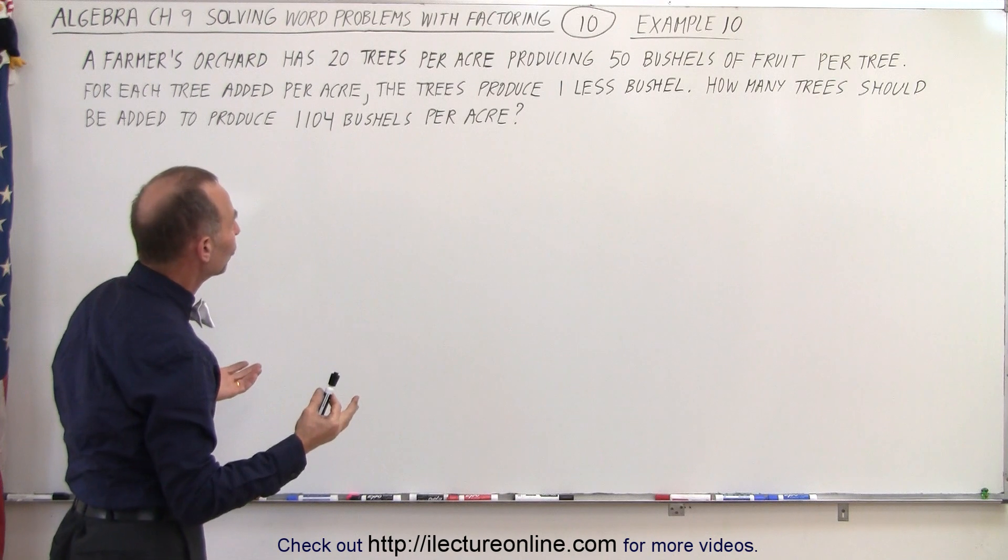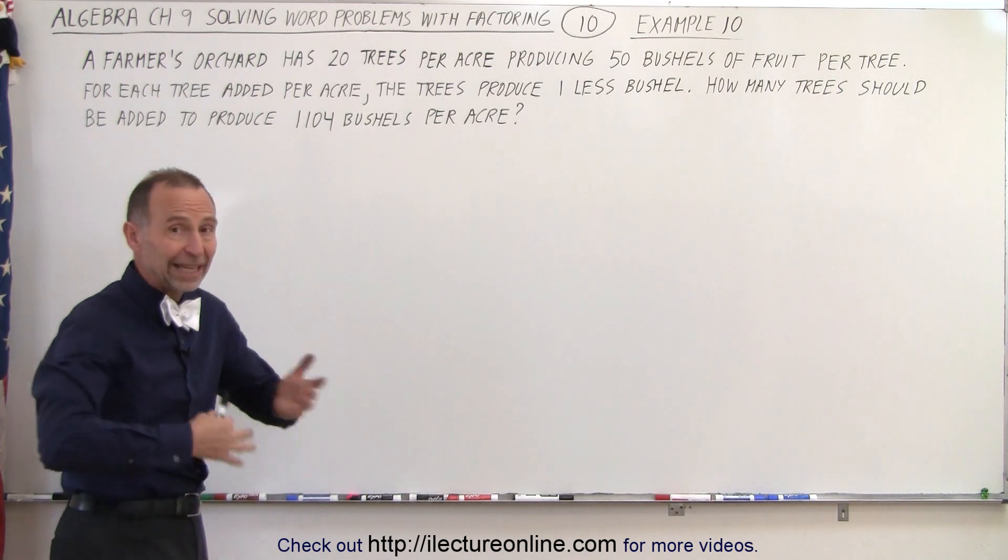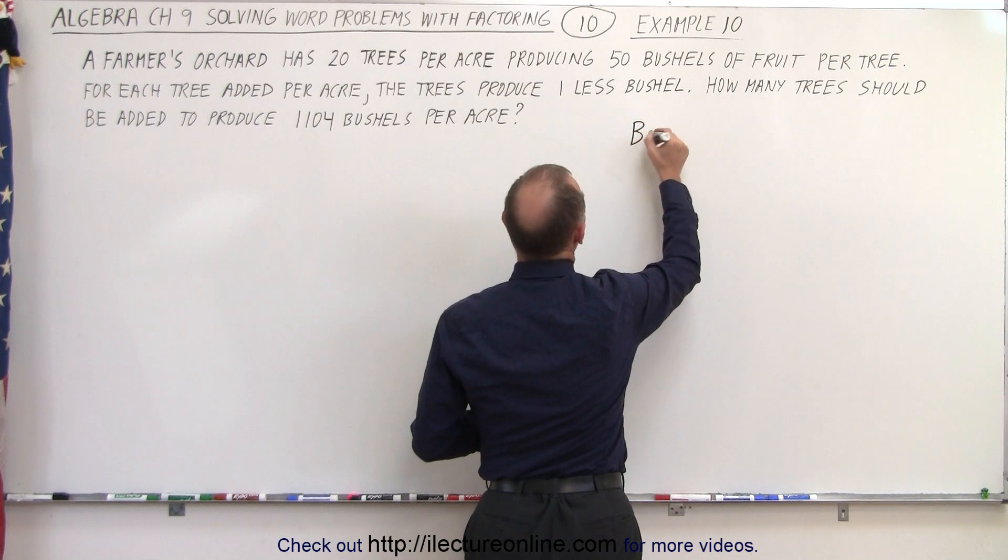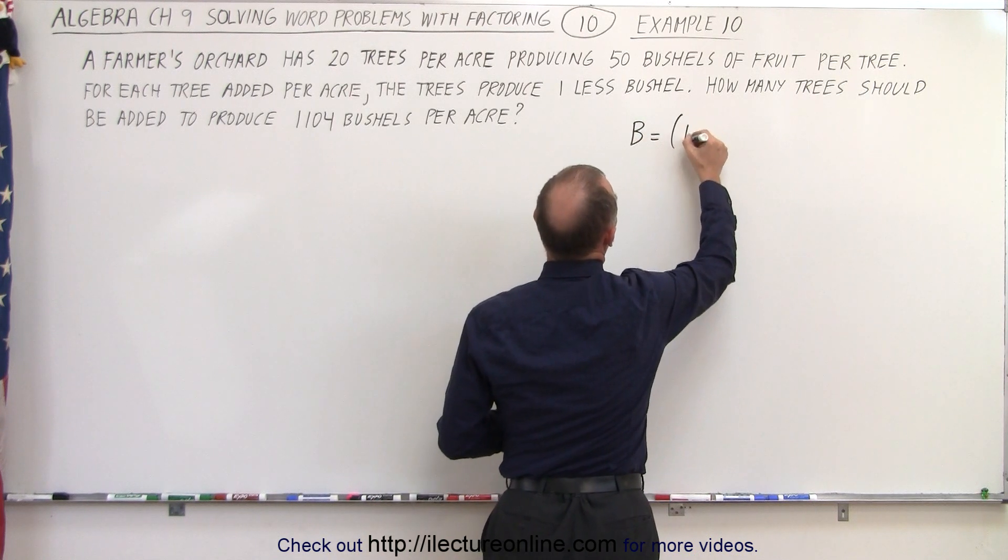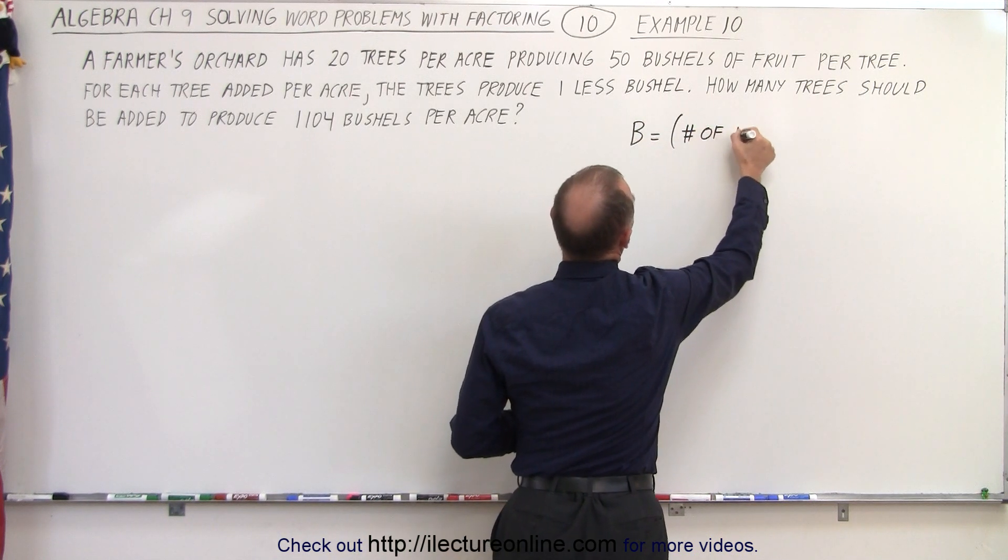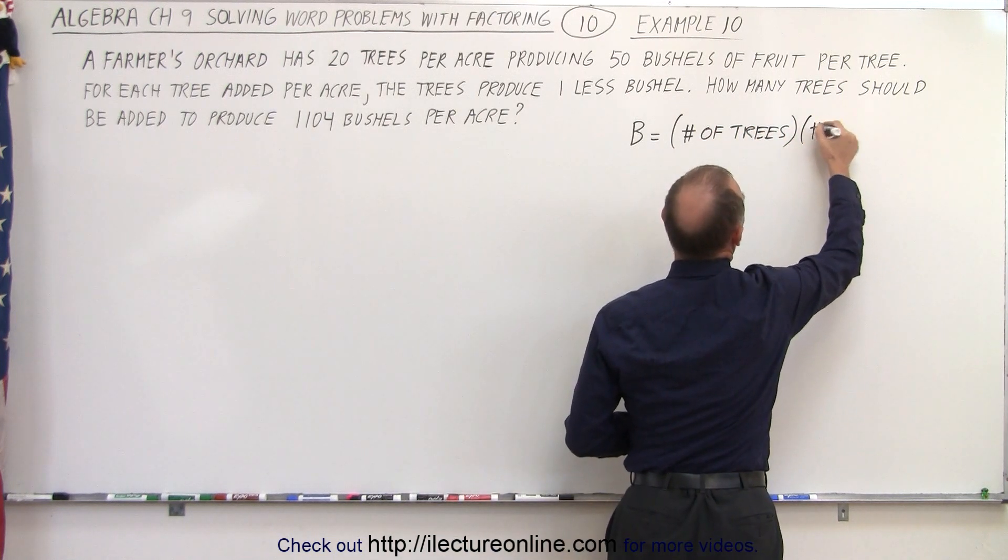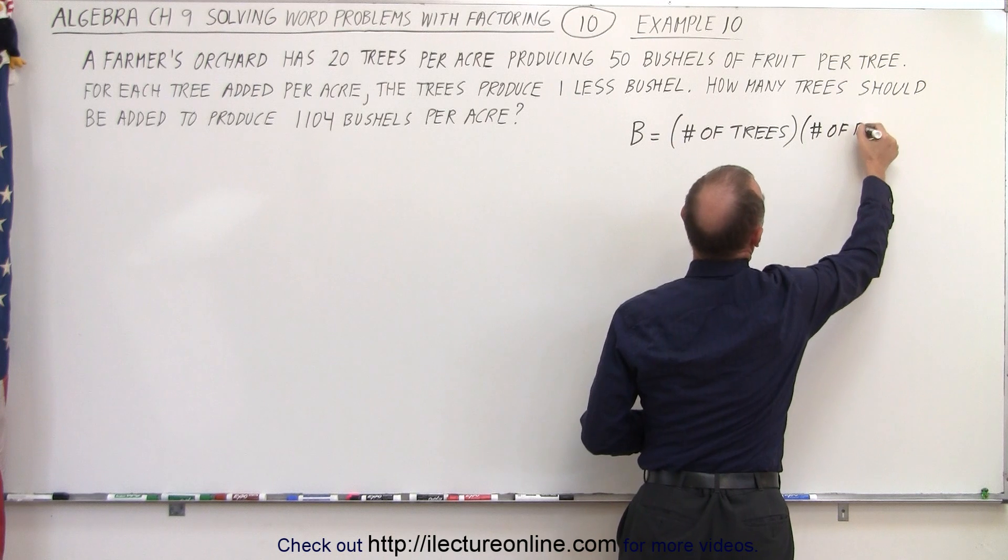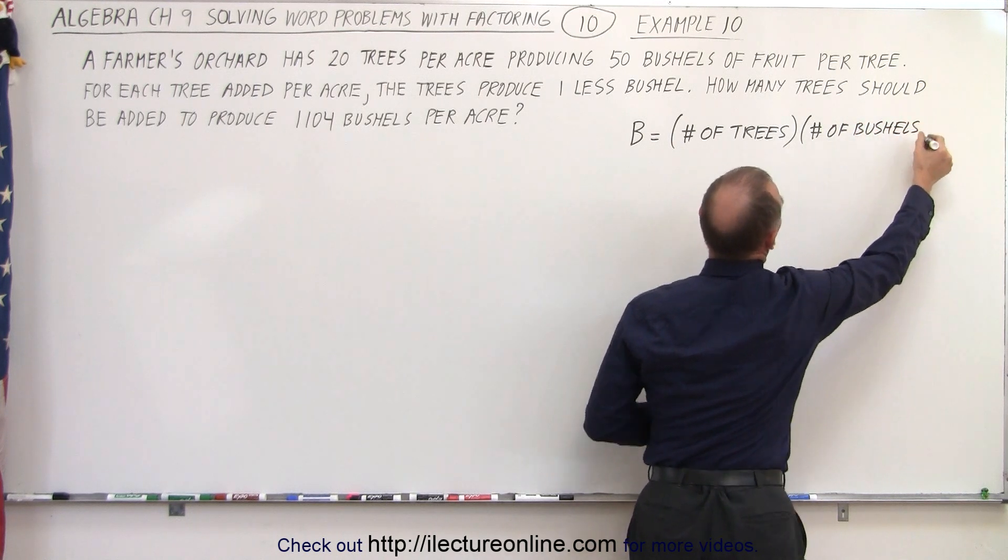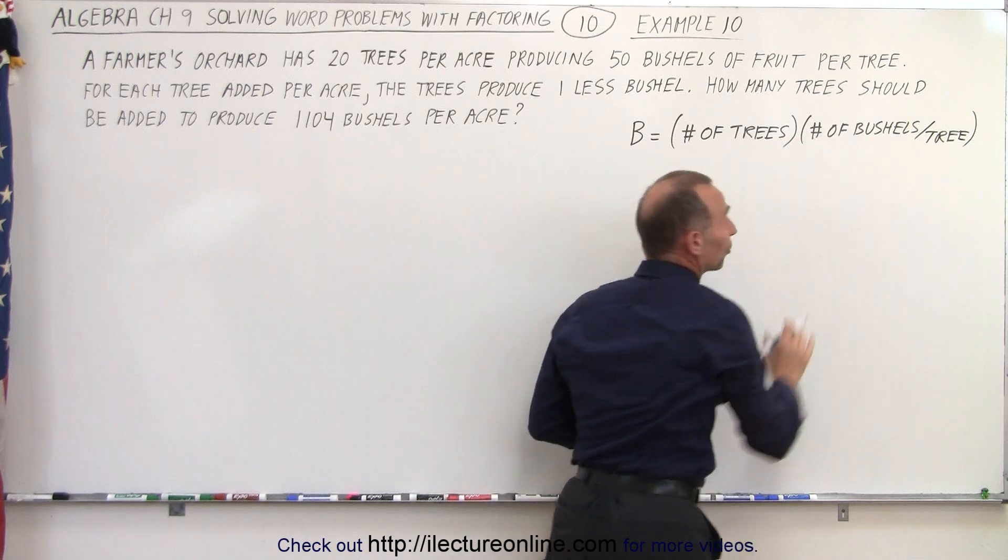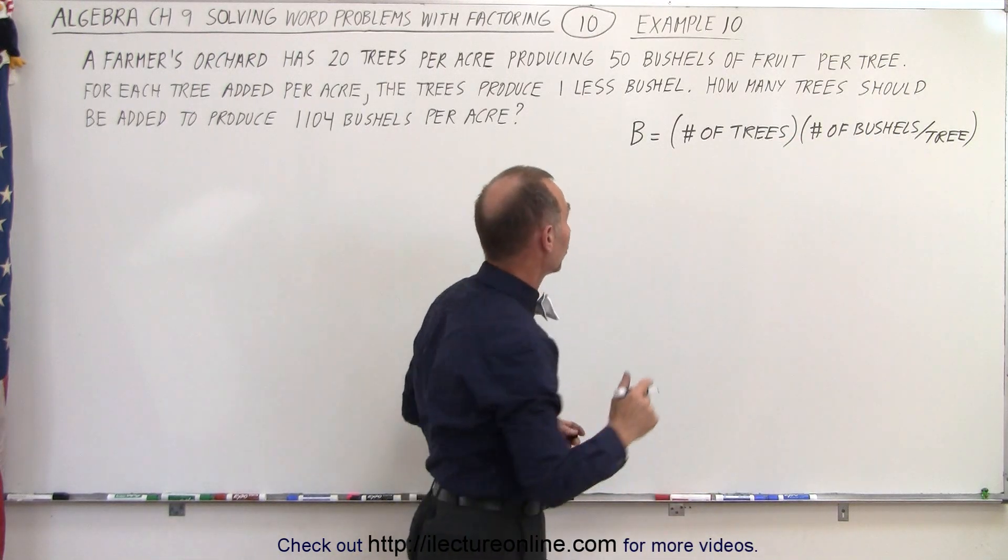So let's find out how many bushels the farmer produces now without changing any number of trees. We can say that the number of bushels produced will be equal to the number of trees multiplied times the number of bushels per tree. If you multiply the number of trees by the number of bushels per tree, we should get the total number of bushels.